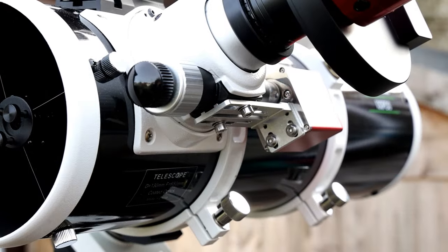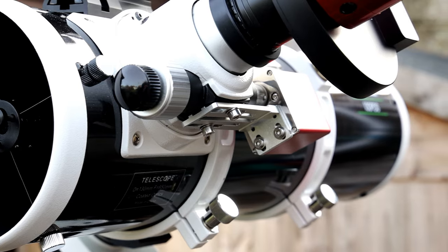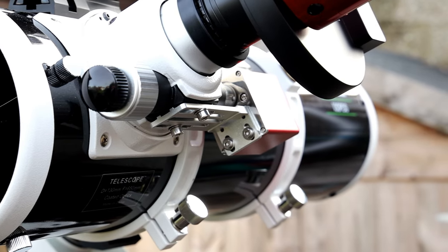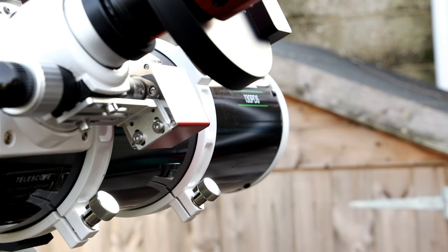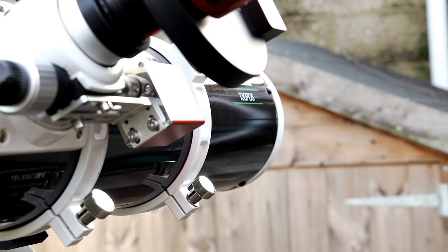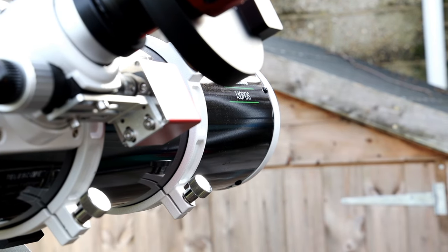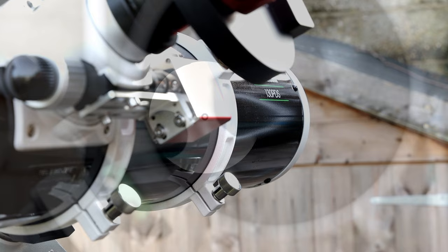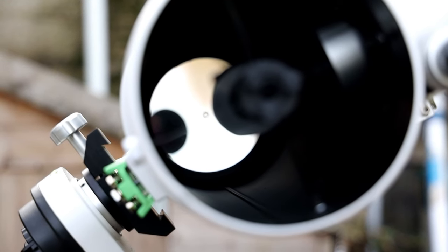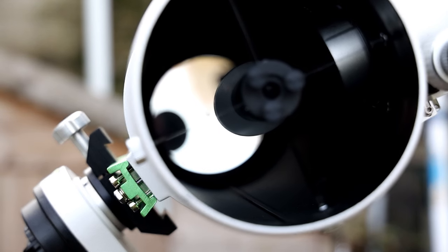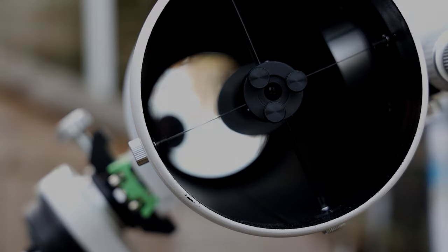The other difference is this has a dual speed focuser with a 1 to 10 ratio. This will allow you to really dial in that focus and make any fine adjustments you need. The scope's really easy to use and takes fantastic pictures. In fact, I would say that this scope punches way above its price tag. I'm going to show you a few images now that I've captured with this scope, and then I'm going to go through some modifications and additions that I've made to it to improve it and make it the best scope it can be.